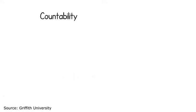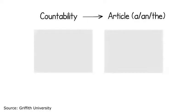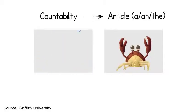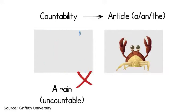Countability is also important for determining which article a, an, or the can be used with a noun. For example, you generally would not use the articles a or an with an uncountable noun.